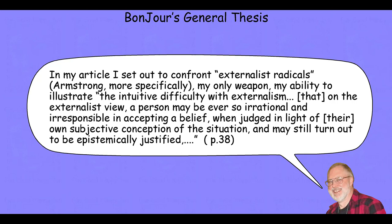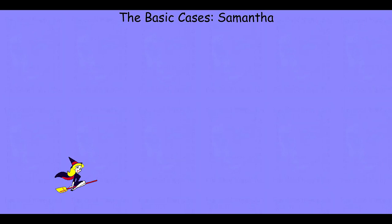And yet on the externalist reliabilist perspective, they still turn out to be epistemically justified. He introduces a number of cases that are supposed to be counter-examples — they satisfy the conditions for Armstrong's reliabilist theory of non-inferential perceptual knowledge — and so the reliabilist would have to say the person is justified. And yet intuitively, Bonjour wants to suggest the person seems unjustified because they are forming a belief in a way that is irrational and irresponsible.